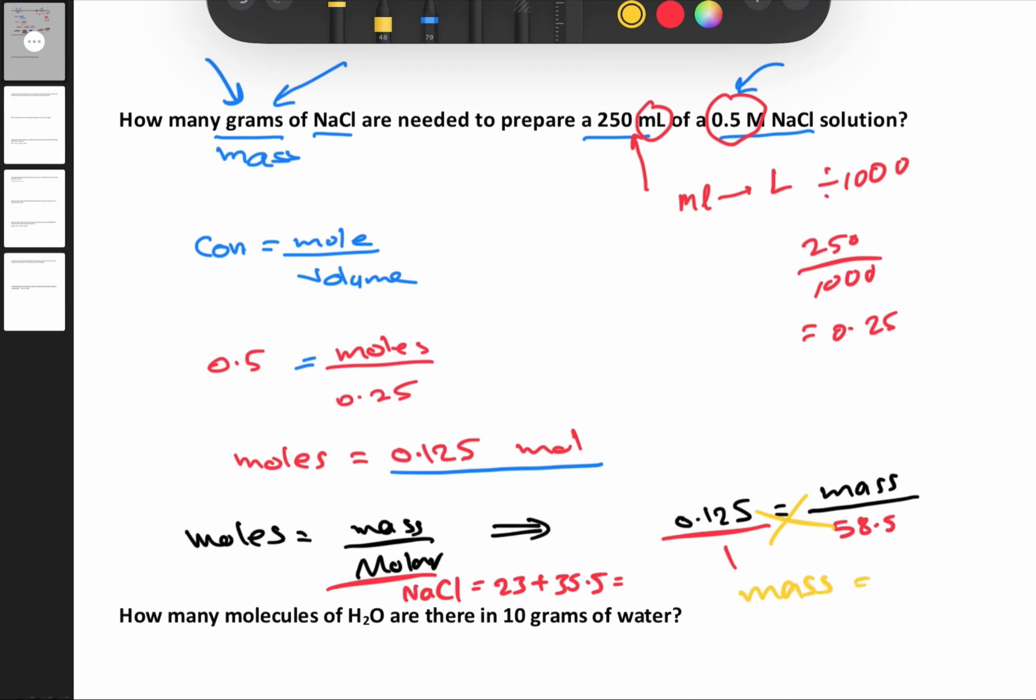The mass equals 0.125 times 58.5, which equals 7.313 grams of NaCl.